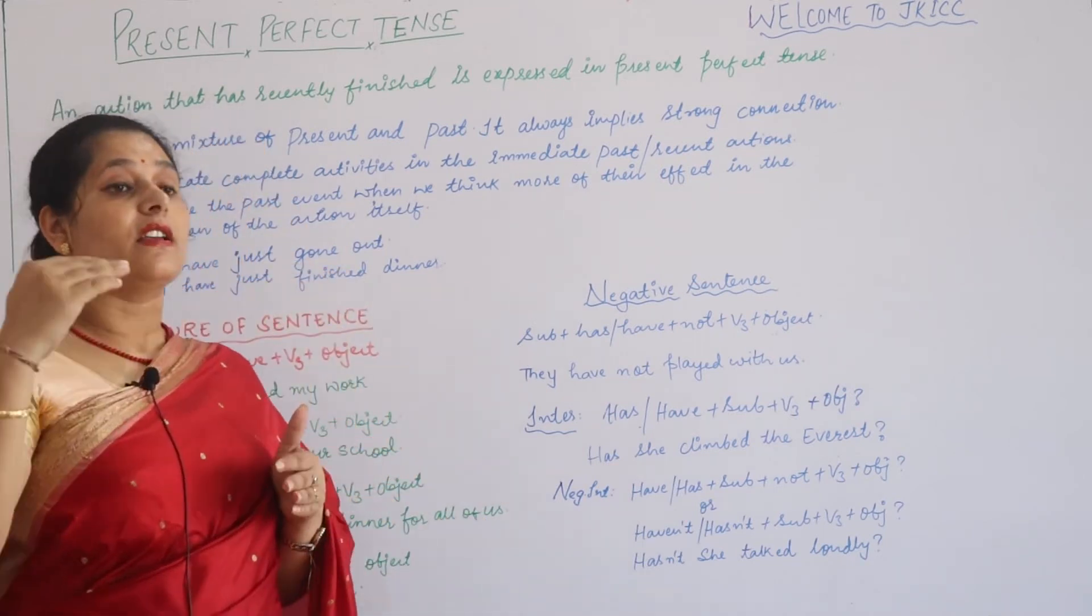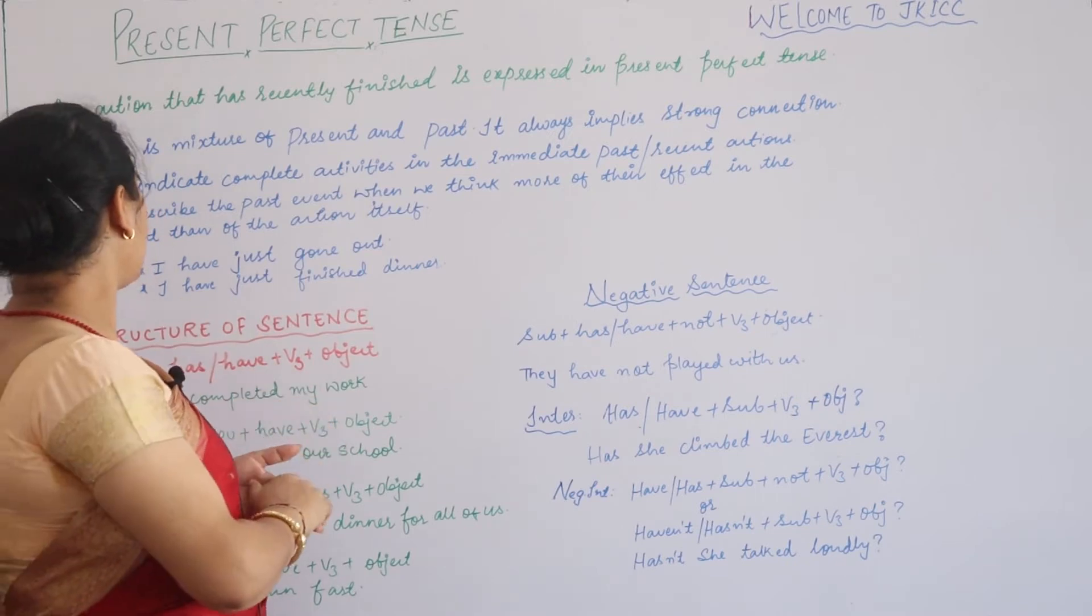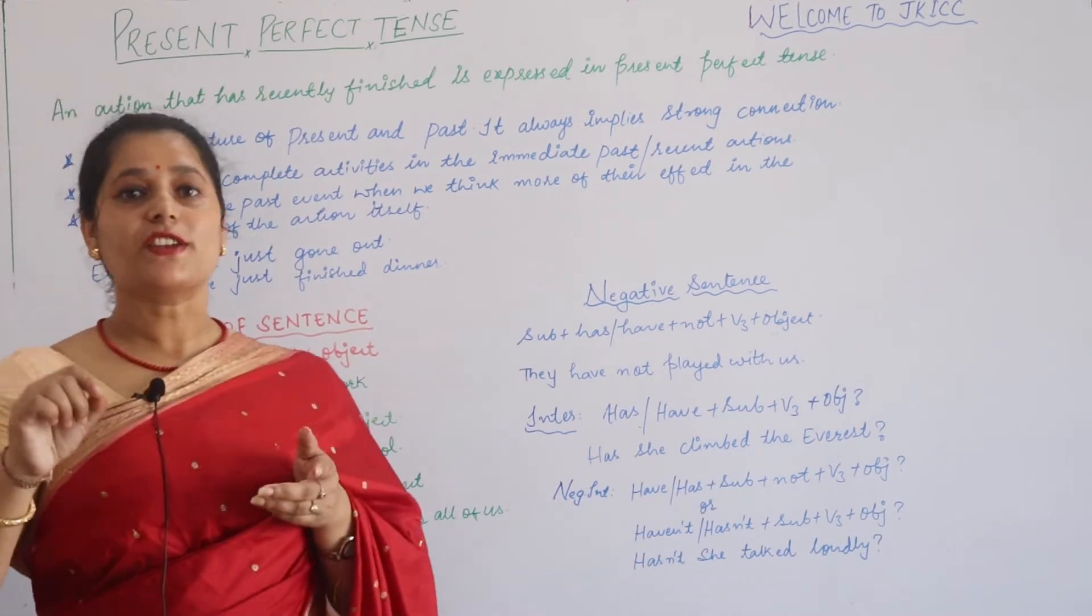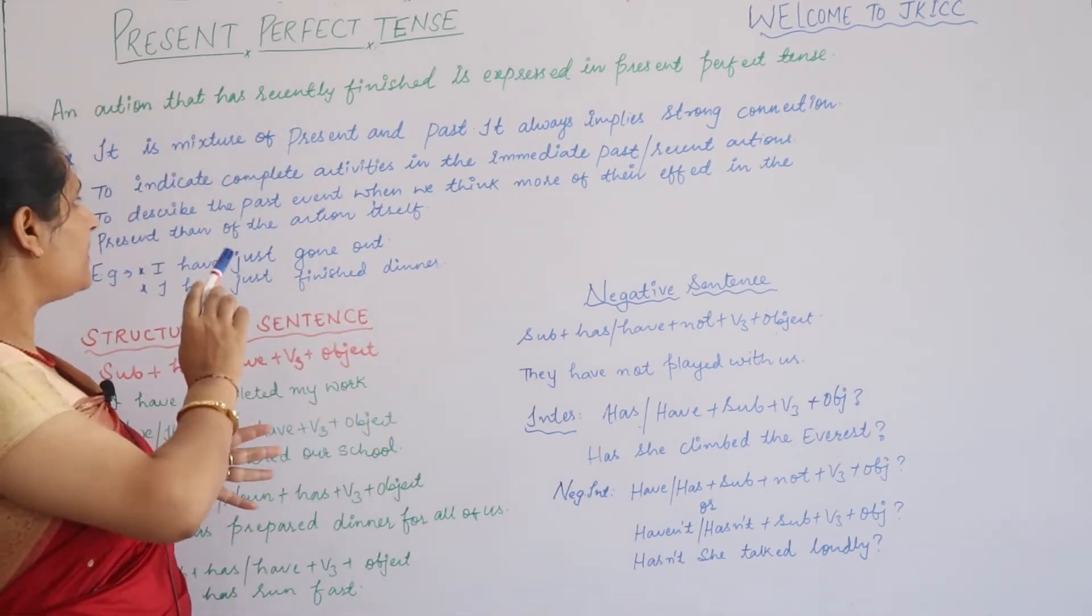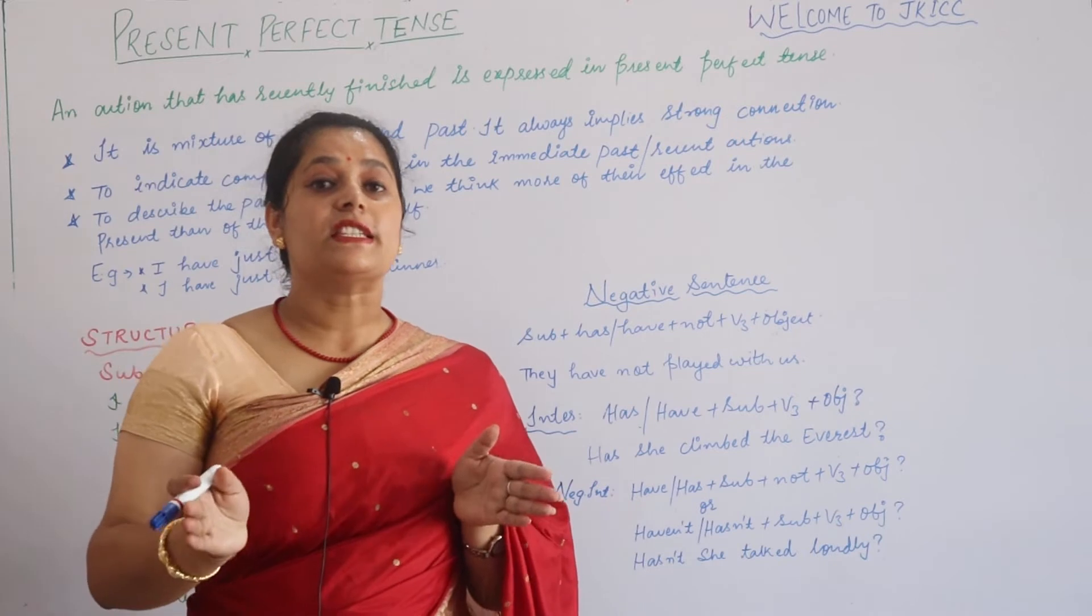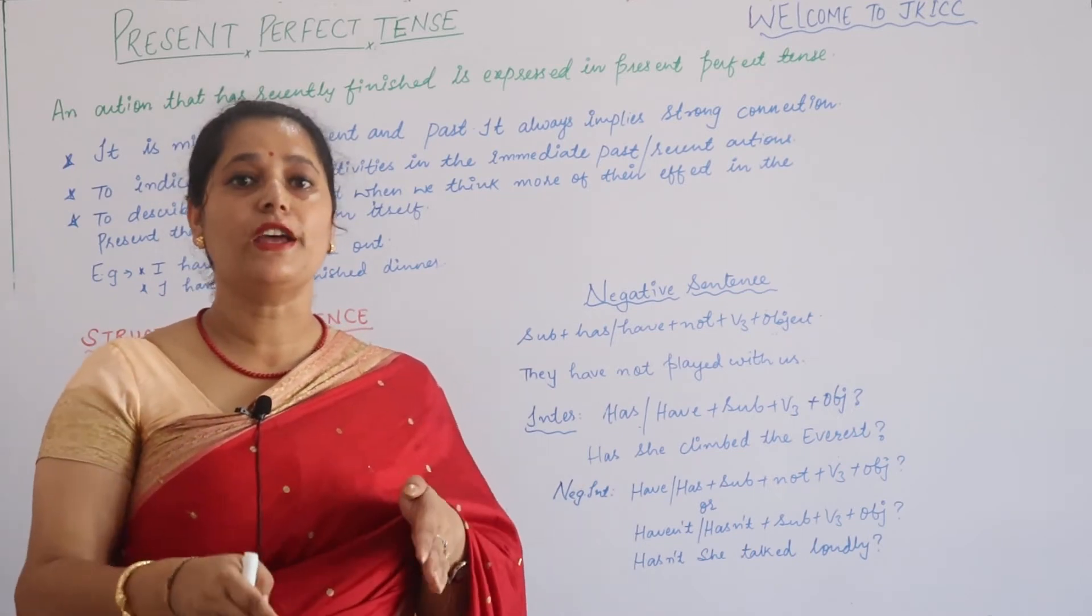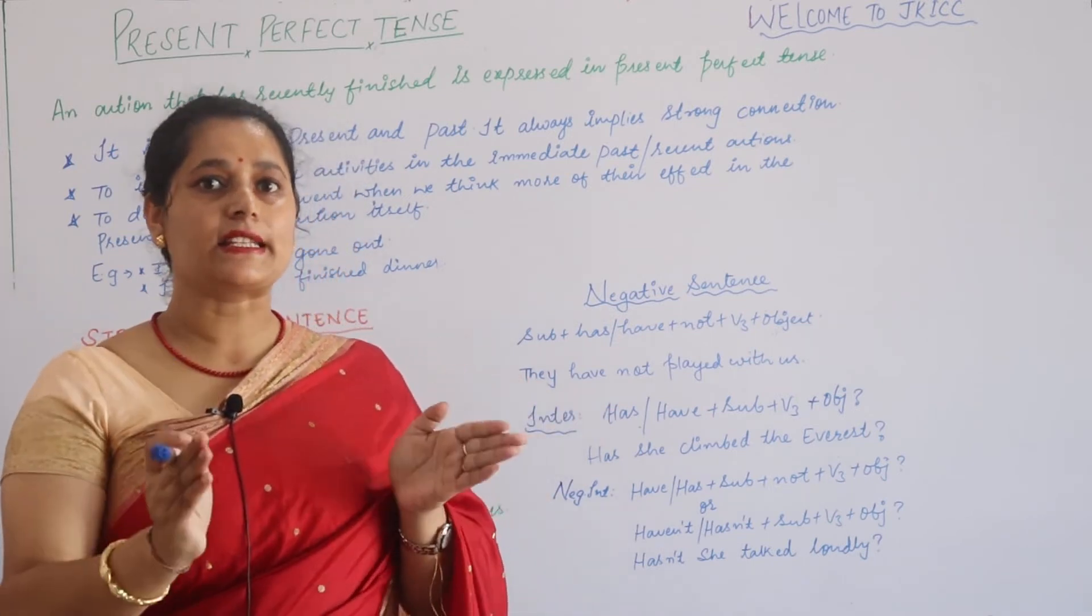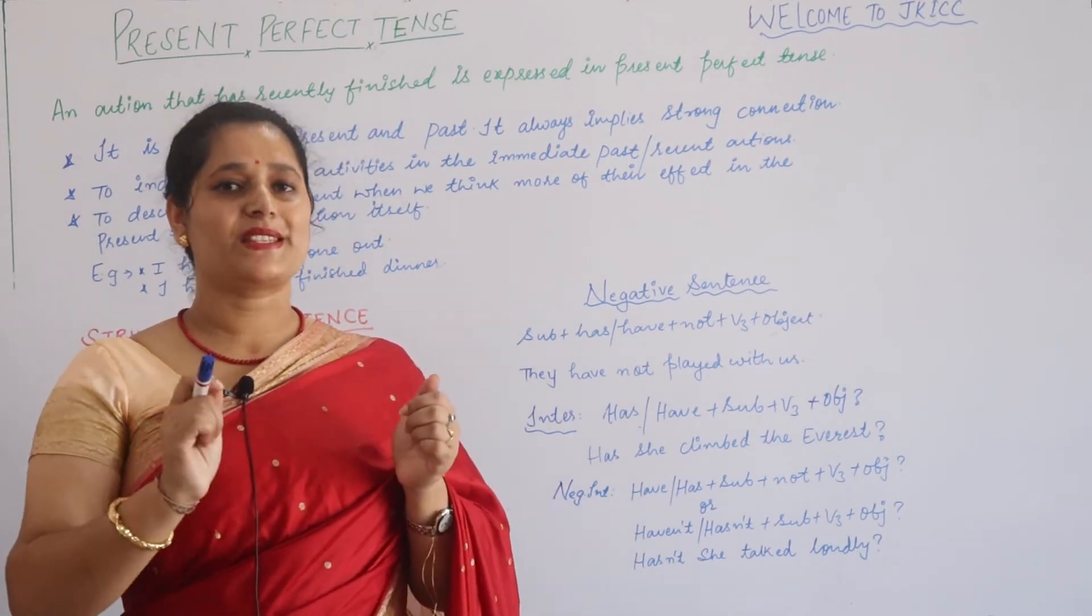The second thing you should keep in mind is to indicate complete activities in the immediate past, recent action which has been done. To describe the past event when we think more of their effect in the present than of the action itself. It means that the work has started in the past, but the impact, the actual effect, is present in the present. This is why when the action started is not that important, but when it is done in the present, that is more important in present perfect tense.